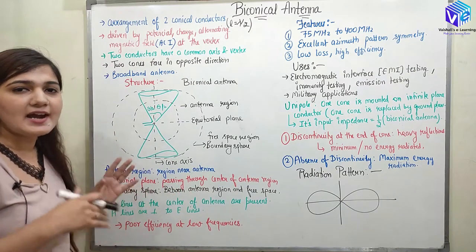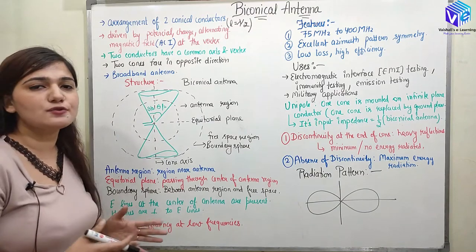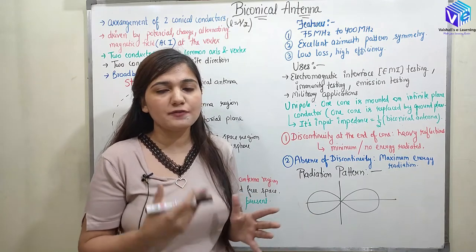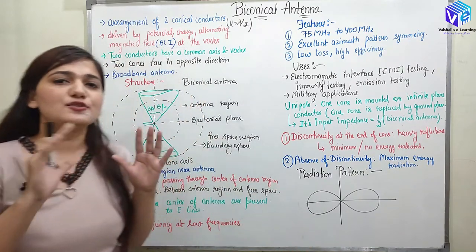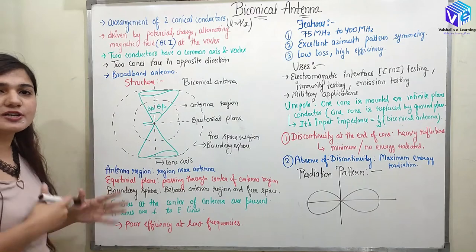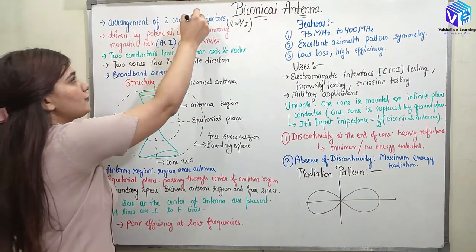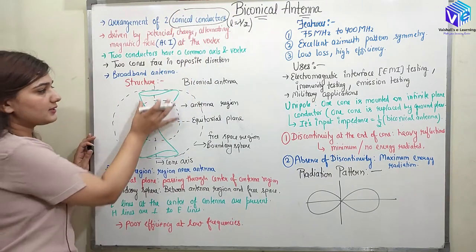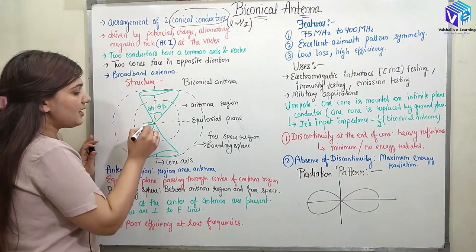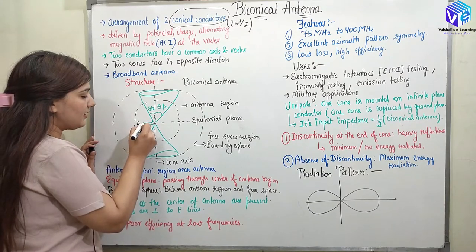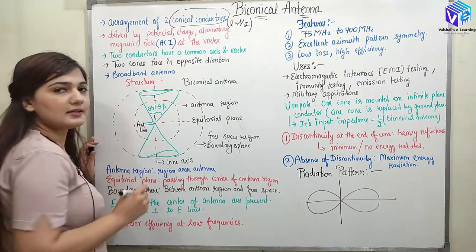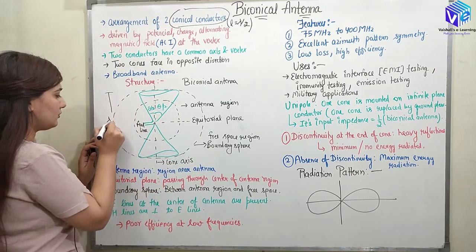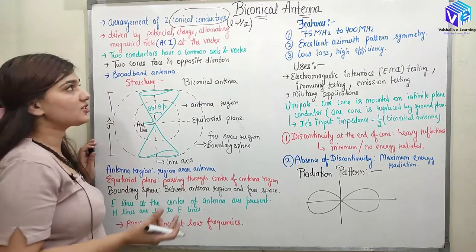Let's understand in detail about this structure and what is the use of the biconical antenna. The biconical antenna is a broadband antenna, so it finds various numerous applications. It is the arrangement of two conical conductors which are having the same feed line, and the overall length is equal to lambda upon 2.